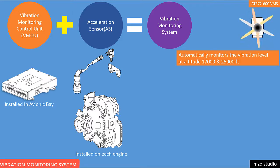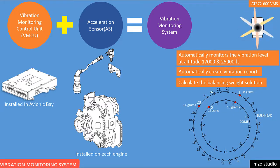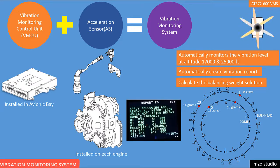The VMS automatically monitors the vibration level at altitude up to 25,000 feet. It automatically monitors and automatically creates a vibration report every 15 hours, and it can calculate the balance weight solution. We are not required to calculate the balance solution — it is automatically calculated. We just apply it to the propeller. This is very simple.